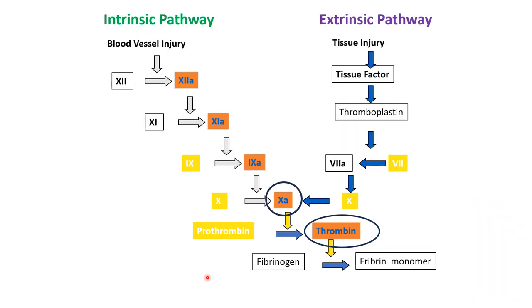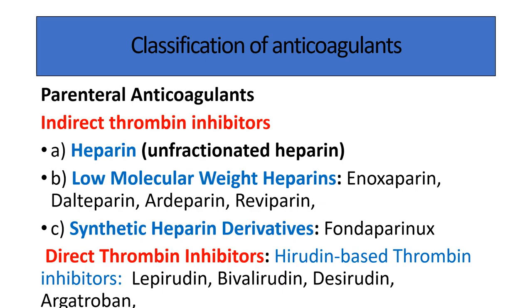Anticoagulant effect is achieved by inhibiting, directly as well as indirectly, the action on thrombin or factor 10a. Now, the classification of anticoagulant drugs.